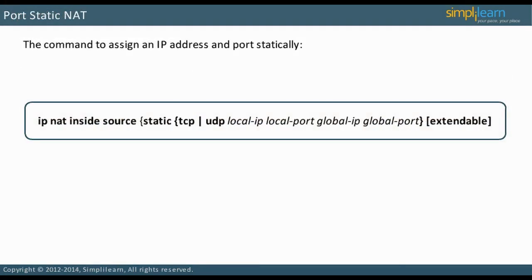To assign an IP address and port statically, use the command 'ip nat inside source static', then either TCP or UDP, followed by the IP addresses and ports to map. If there are multiple servers that require access from the internet, port static NAT can use just one IP address with different port numbers for each server. This saves routable addresses.